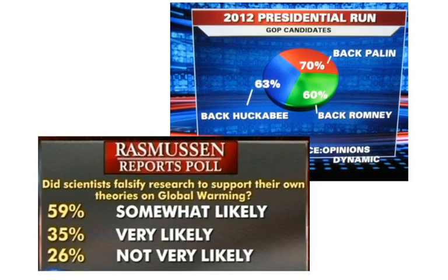Here are a couple more problematic graphs. One pie chart does not add up to 100% — a pie chart should always add up to 100%, making this data meaningless. Another graph shows percentages for categories like 'somewhat likely,' 'very likely,' and 'not very likely,' but it only includes respondents who falsified. The ones who did not falsify could be 98% of the data, and this is just a small part of that — so they're only showing the 'yes' responses and not the 'no' responses.